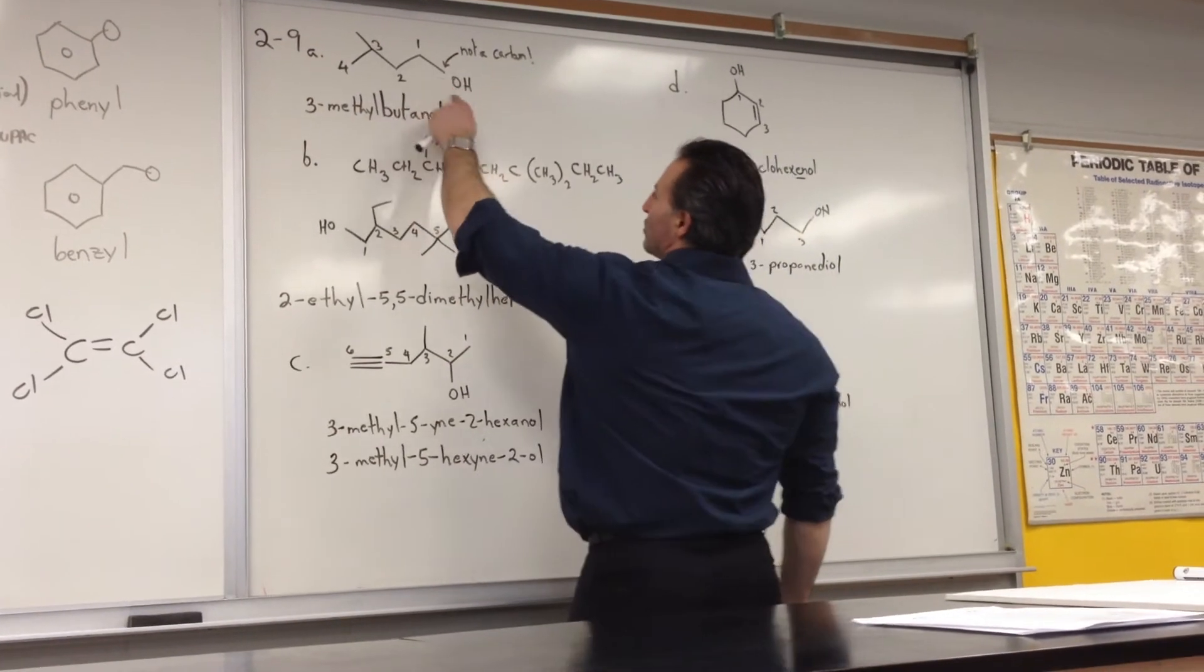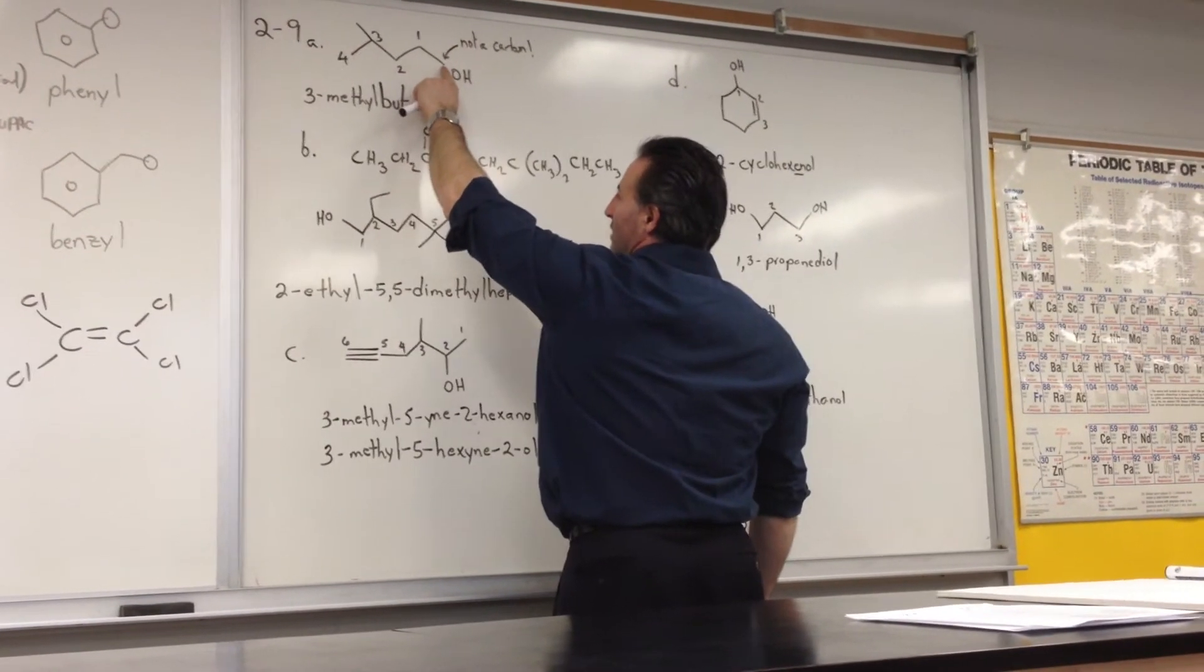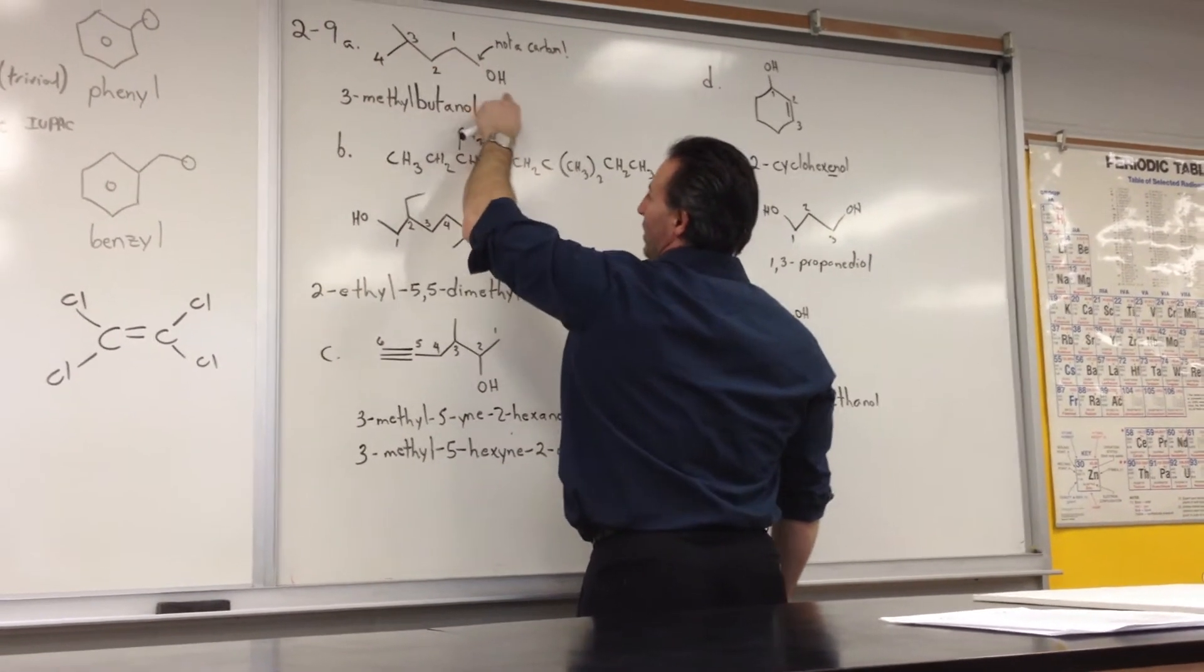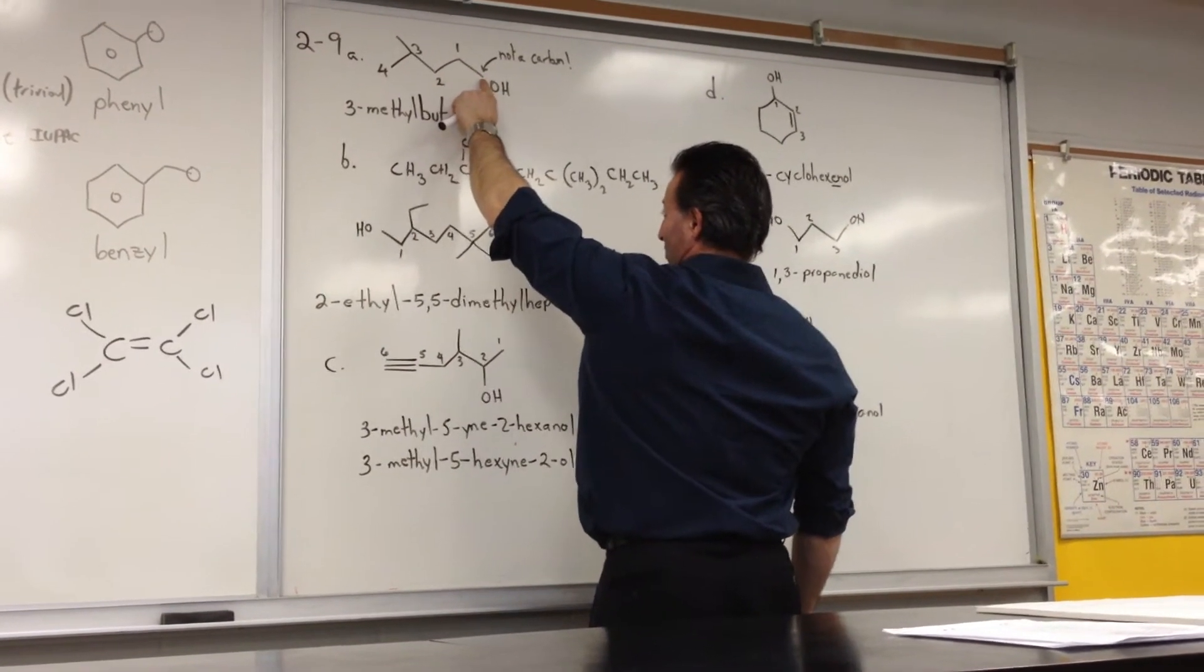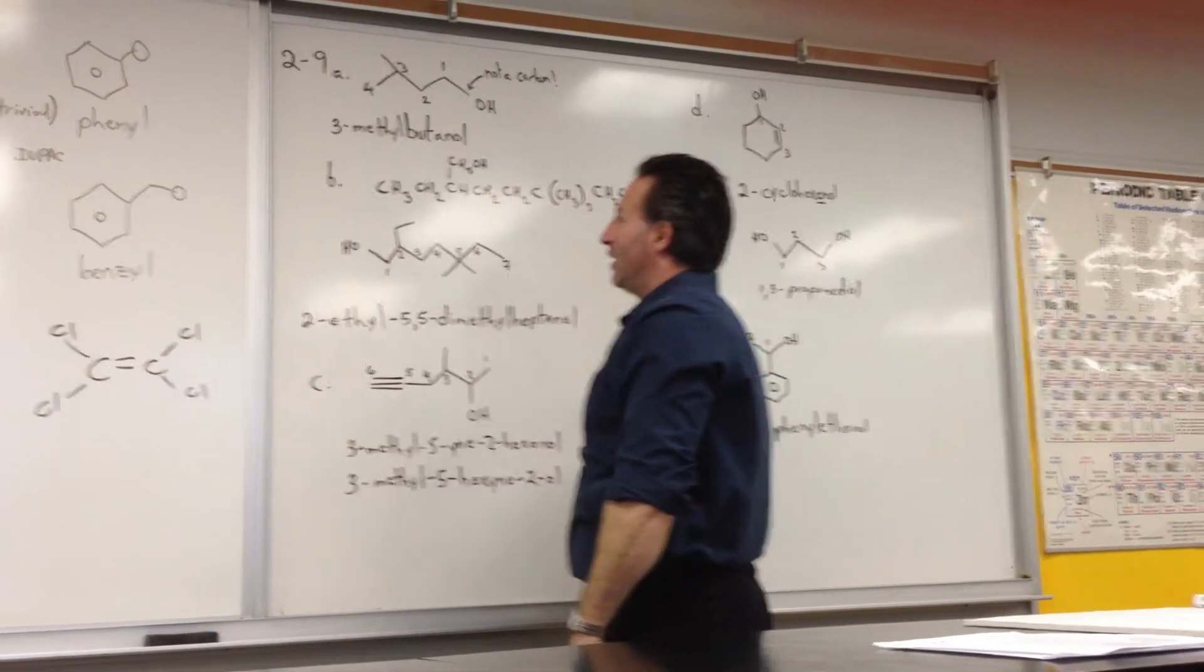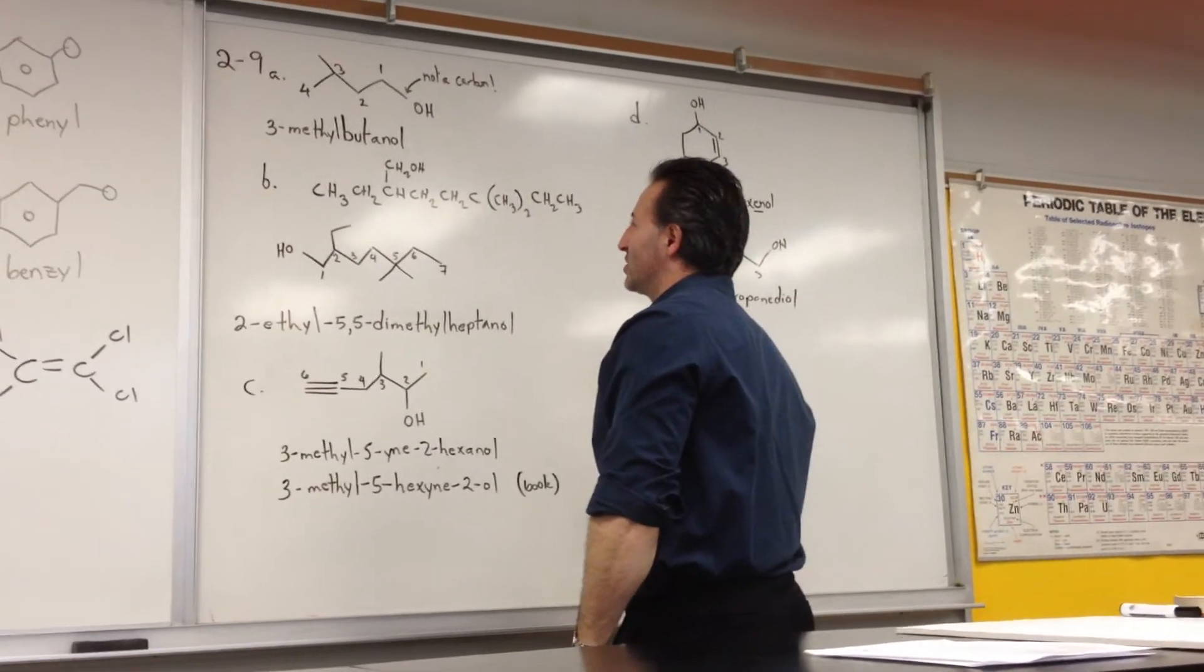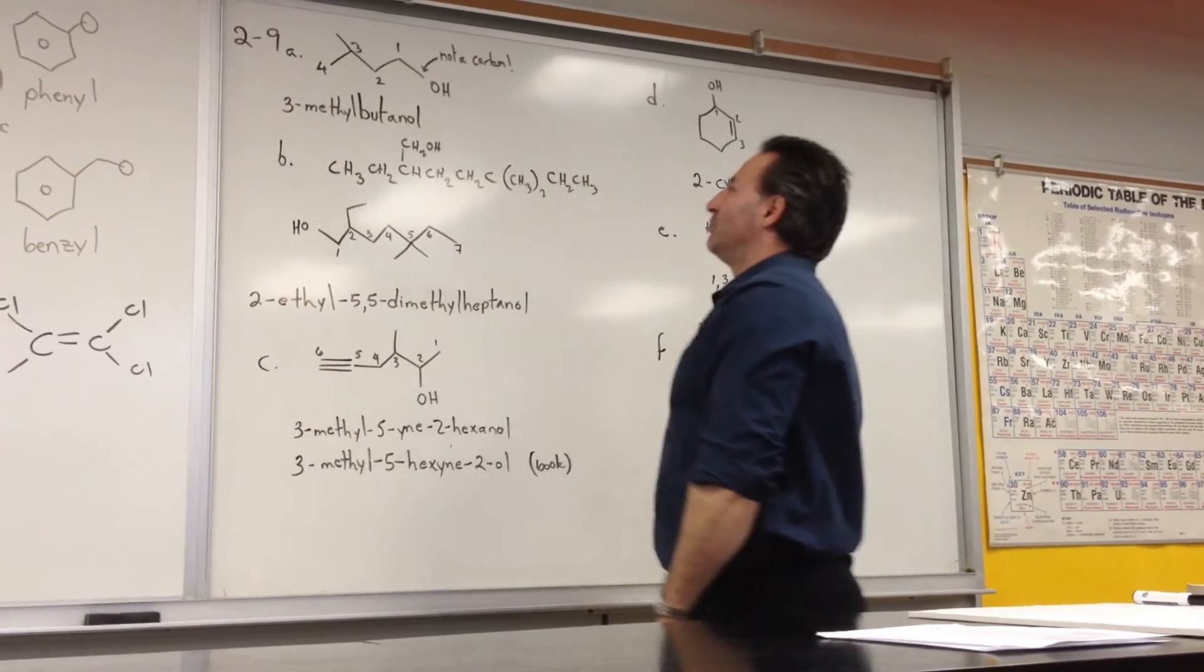Take note of the fact that when you have an OH group written in bond line notation, that this line here, the end of this line does not represent the carbon. This is the first carbon. The OH is attached to the first carbon. Very often students have the impression that there's a carbon there, and they end up adding an extra carbon to the length of the chain. So 2,9A in our handout is a butane skeleton with an alcohol at the first position and a methyl group at the third. So we call it 3-methylbutanol.